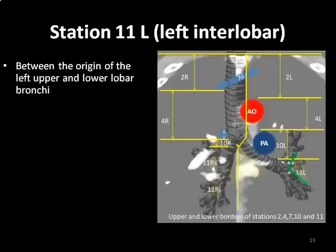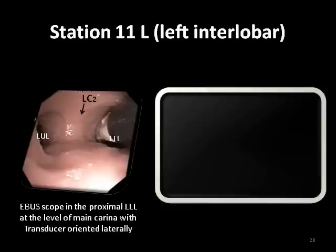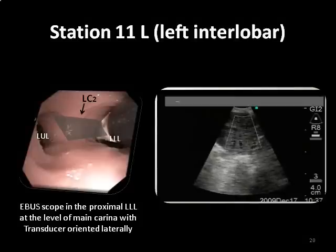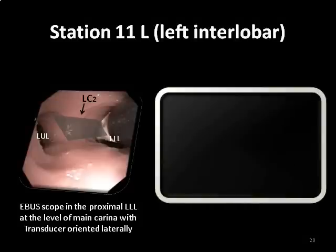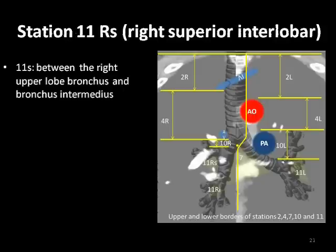Station 11L is comprised of nodes located in the region between the origins of the left upper and lower lobar bronchi. To visualize hilar Station 11L, the scope is advanced towards the proximal part of the lower lobe bronchus, with the transducer oriented laterally towards the left in order to scan for interlobar lymph nodes. In this example, the lymph nodes and lung parenchyma are visualized, but depending on the exact position of the node and scanning orientation, interlobar vessels may be seen as well.